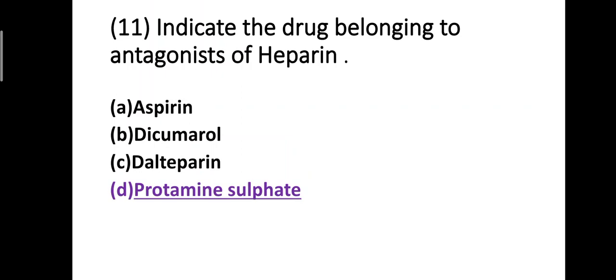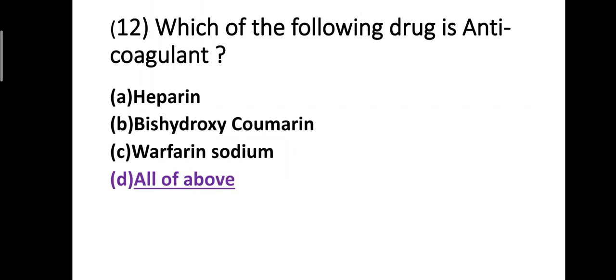Question number eleven: Which drug is the antagonist of heparin? Option A: aspirin, option B: dicoumarol, option C: dalteparin, option D: protamine sulfate. Correct answer is option D, protamine sulfate. Protamine sulfate is the antagonist of heparin.